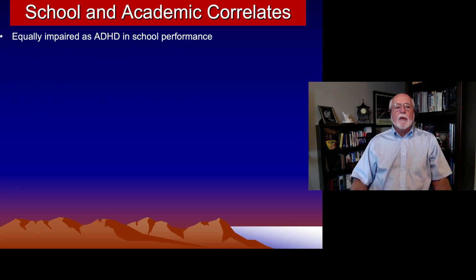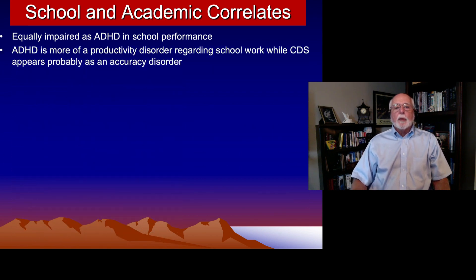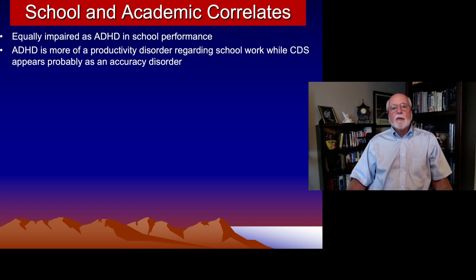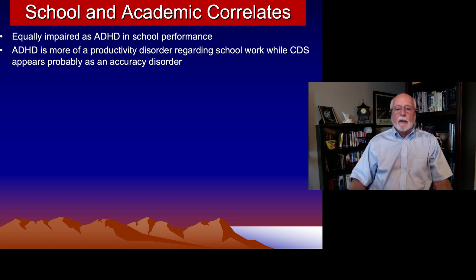In school and in academic subjects, both CDS and ADHD impair school performance to about an equal percentage. But the problem reported in ADHD is one of productivity — ADHD kids just don't get a lot of work done, though what little they do is probably reasonably accurate. In contrast, CDS kids do get the work done — it's not a productivity disorder — but it's not very accurate. They're missing important details and therefore making many more mistakes than other kids.